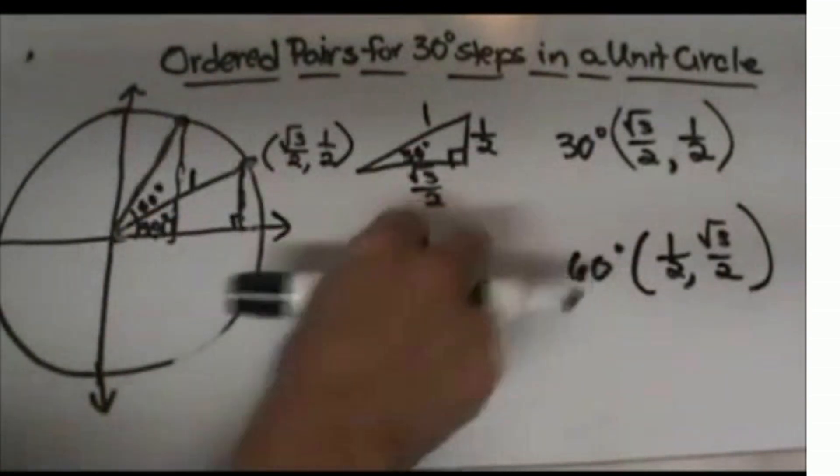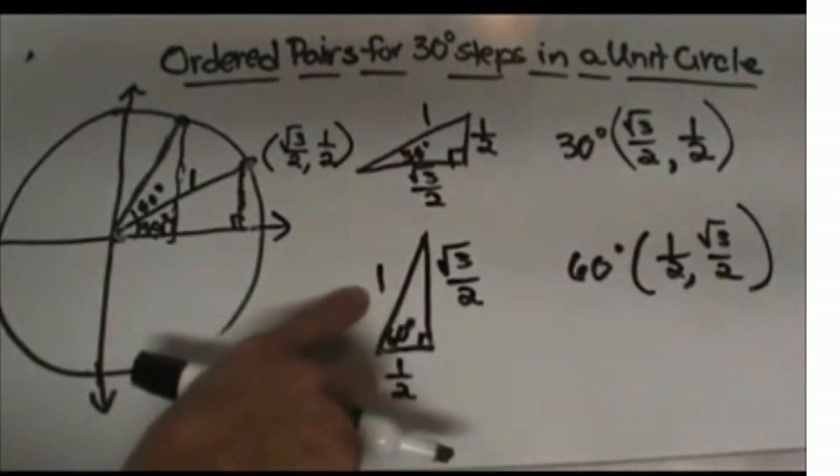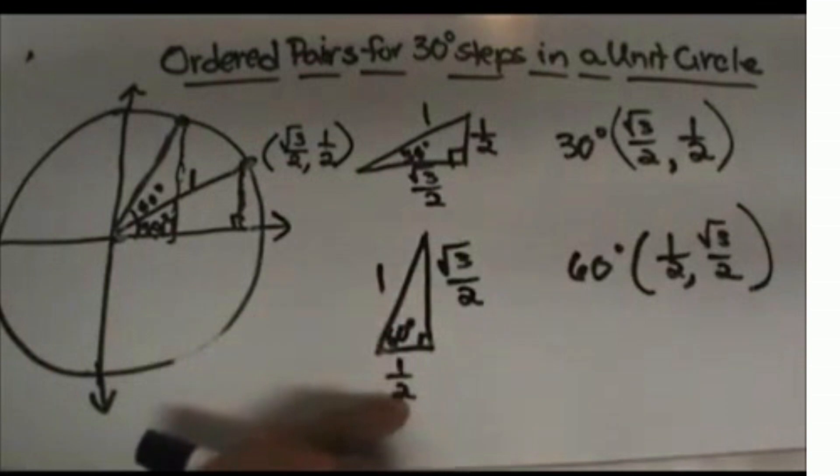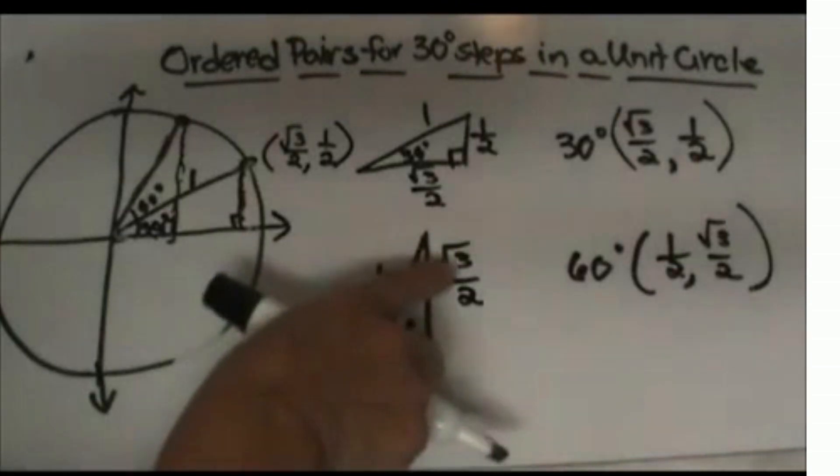See how I've pulled that out over here. This radius is 1, and the short leg this time is down here. That's 1/2. To get the long leg you take 1/2 times the square root of 3, which gives √3/2.